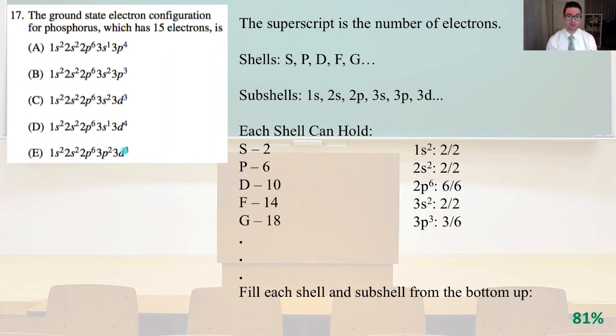That gives us 1s² with 2 out of 2 electrons, 2s² with 2 out of 2 electrons, 2p⁶ has 6 out of 6 electrons, 3s² has 2 out of 2 electrons. Now we run into our last 3 electrons, the 3p³ has 3 out of 6 electrons. And so that is answer B.